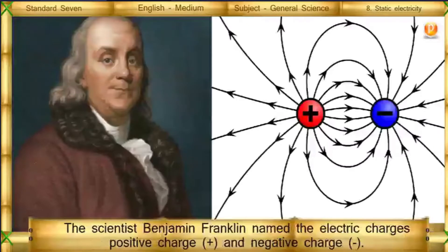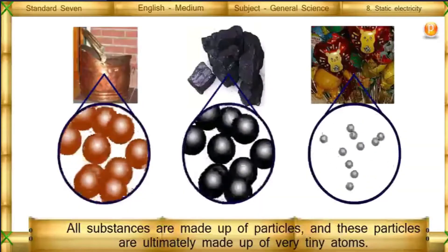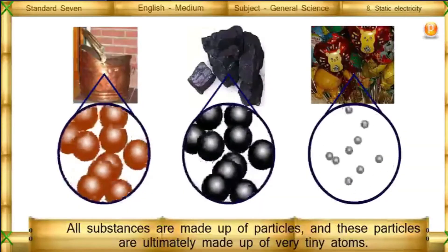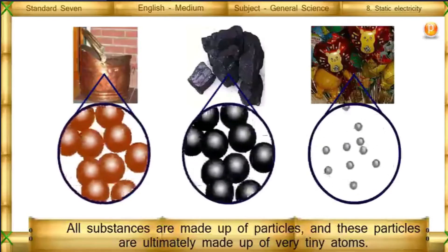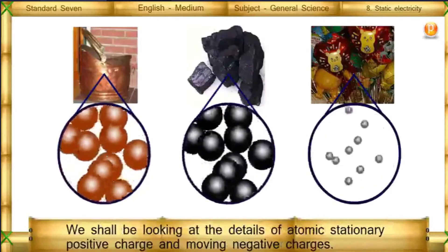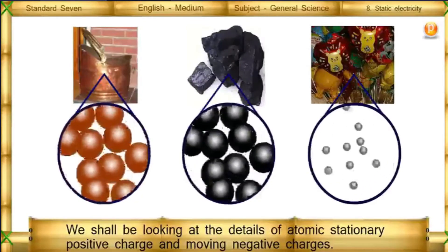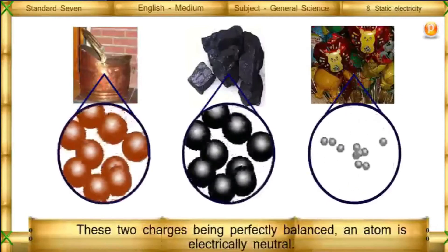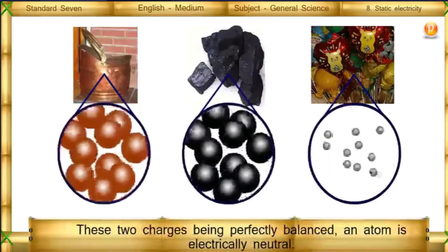The scientist Benjamin Franklin named the electric charges positive charge (+) and negative charge (−). All substances are made up of particles, and these particles are ultimately made up of very tiny atoms. Atoms have stationary positive charges and moving negative charges. These two charges being perfectly balanced, an atom is electrically neutral.